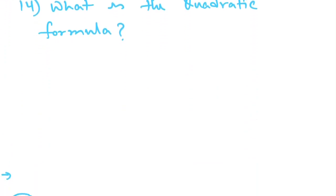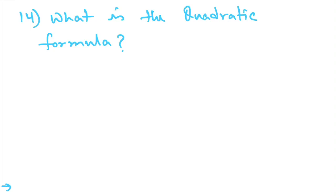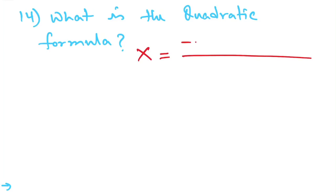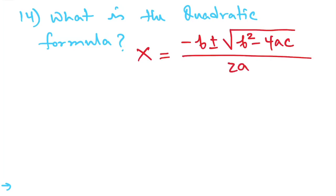Let's move on to question number 14: what is the quadratic formula? I'll give you 10 seconds to think about it. The quadratic formula is: x equals negative b plus or minus the square root of b squared minus 4ac, divided by 2a.